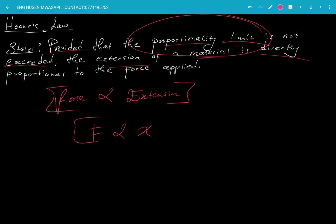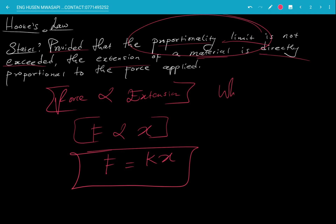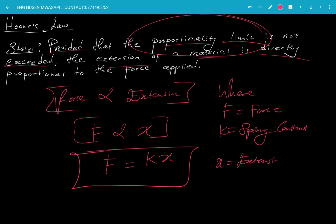And since this is a variation, to be precise, force is simply equal to KX. In our equation, F is simply the force, K is what we call the spring constant, and X is simply our extension. Be mindful of this: force is measured in newtons, the spring constant is measured in newtons per meter, and the extension is simply measured in metres.